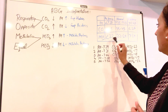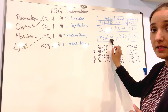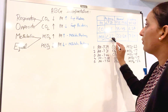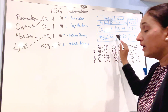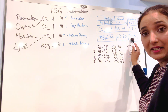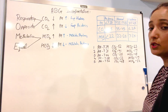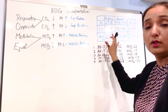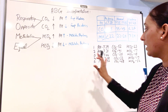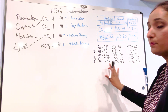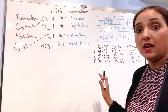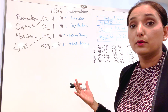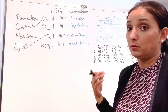If bicarb is less than 22, it means it's going down — that means body is going into acidosis. If bicarb is more than 26, that means body is going into alkalosis. This is the basic thing you need to understand before you solve problems — whether it's respiratory acidosis, respiratory alkalosis, metabolic acidosis, or metabolic alkalosis.